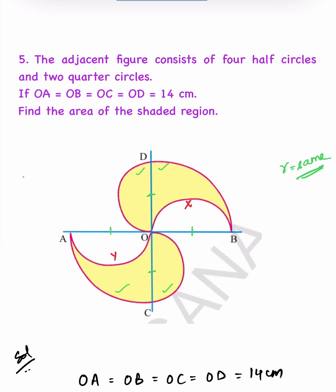Now let us get into the problem. In this quarter circle O, B and D, we don't have to include the area in white. So this area in white should not be included — it has to be subtracted. Again, this semi-circle in yellow has to be added because it is in yellow, we have to include that.